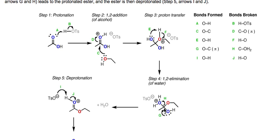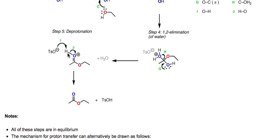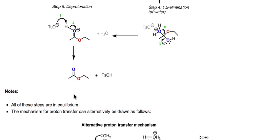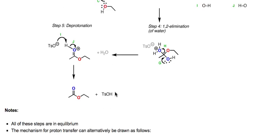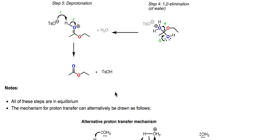The lone pair from the blue oxygen comes down and we lose water — this is elimination. In this step we form a carbon-oxygen pi bond and break a carbon-oxygen bond, losing water as shown by arrows g and h. In the final deprotonation step, we simply remove a proton from the blue oxygen to give us our neutral ester along with tosic acid. Although shown as single arrows, all these steps are in equilibrium — we drive it forward by using alcohol as the solvent.